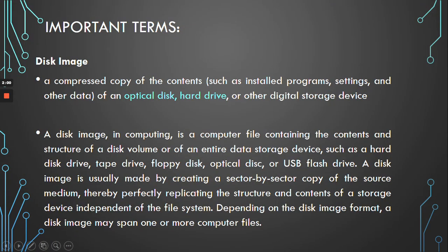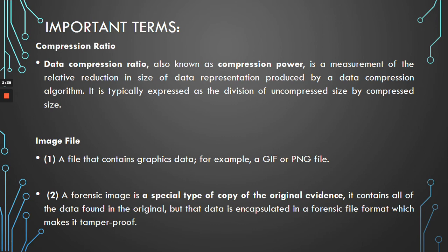So we would like to talk about disk image. A disk image is a compressed copy of contents — such as the installed program settings and other data — of an optical disk, hard drive, or other digital storage device. In computing, it is a computer file containing the contents and structure of a disk volume or entire data storage. In digital forensics, if we take your hard drive and create a copy of it, that copy is called a disk image.